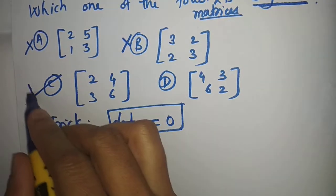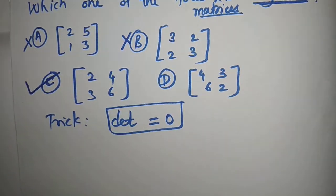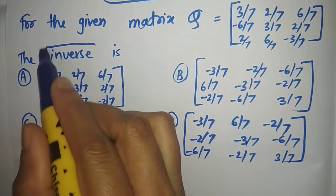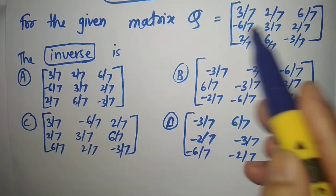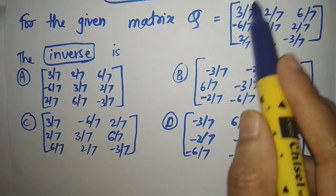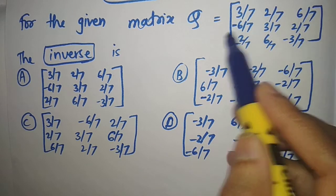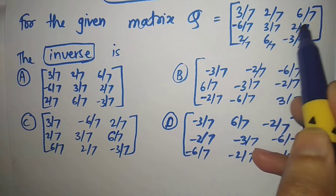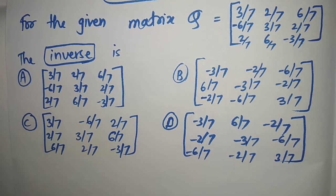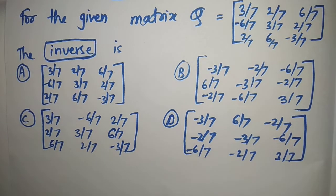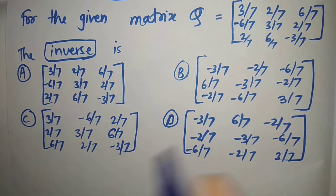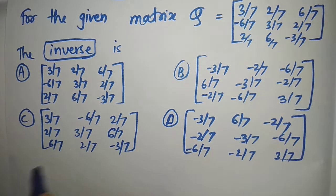The answer is the matrix [[2,4],[3,6]]. The next question is about the inverse of a given matrix Q, where Q = (1/7)·[[3,2,6],[-6,3,2],[2,6,-3]].